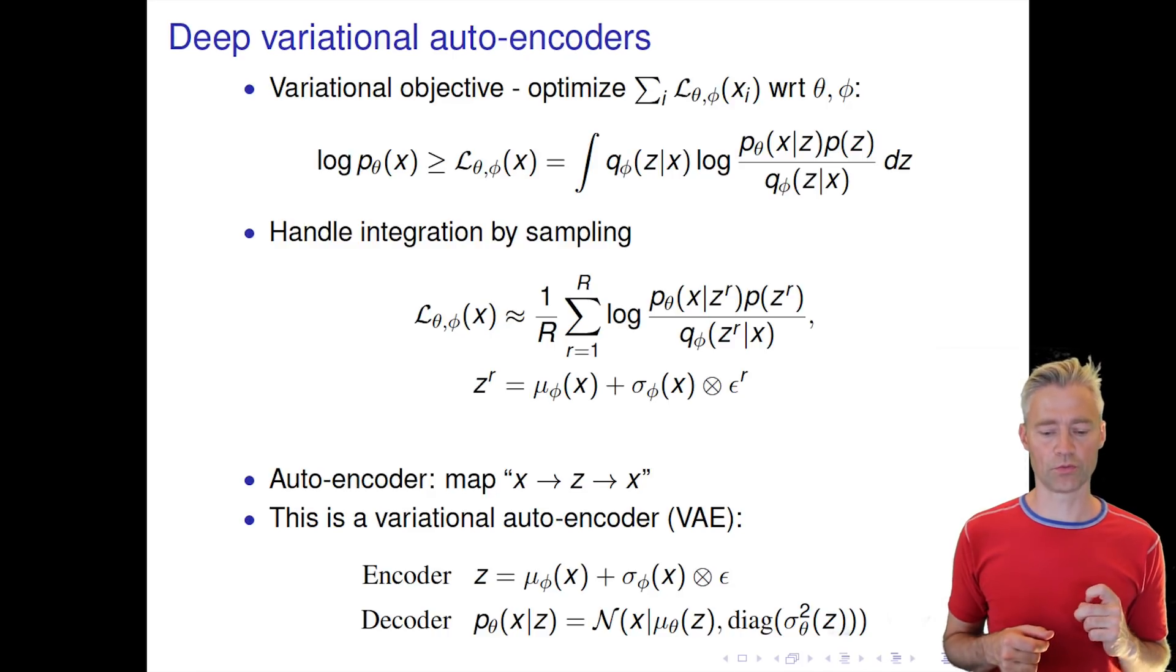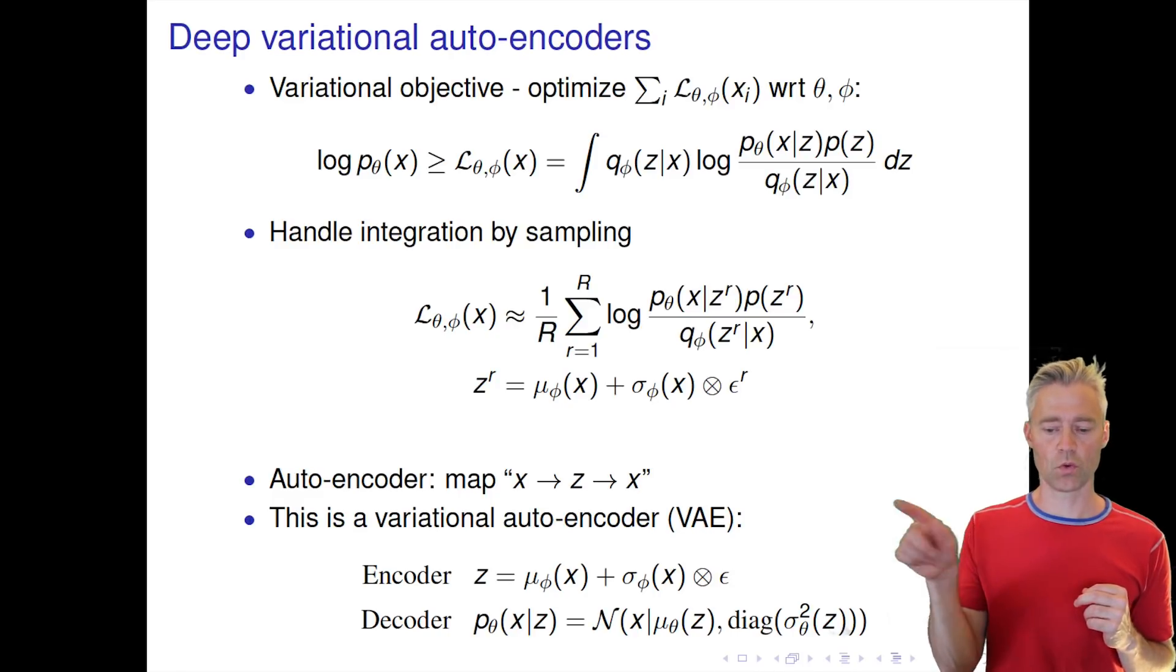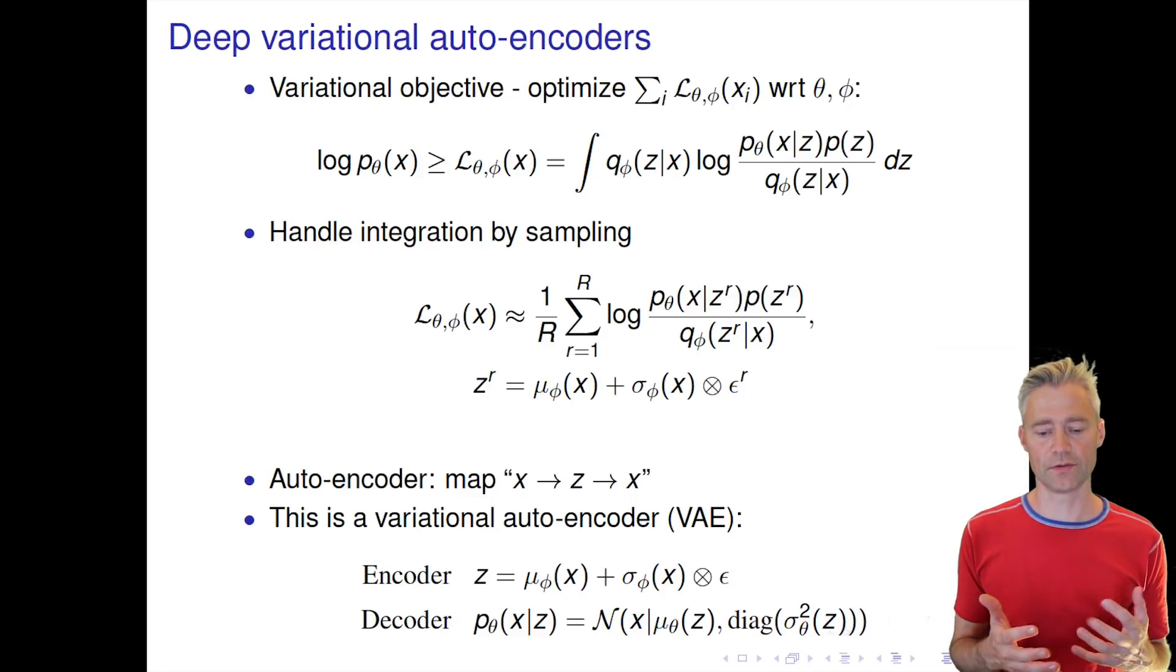The stochastic part comes from this epsilon drawn from a zero-one normal. Then the decoder maps back and allows us to compute the conditional density of our observation x for this data point.